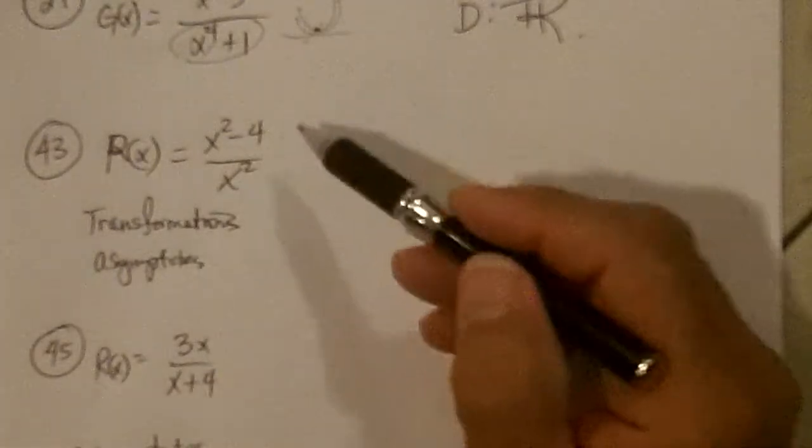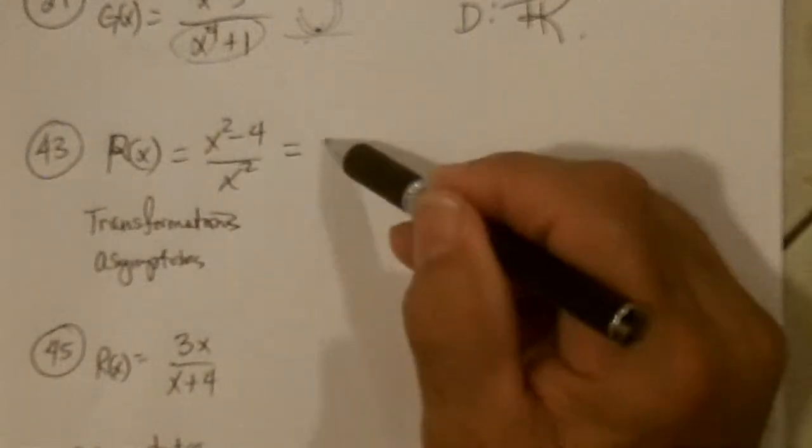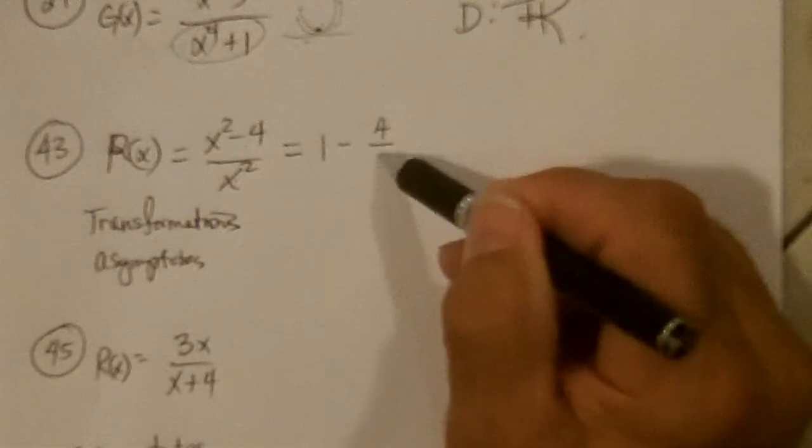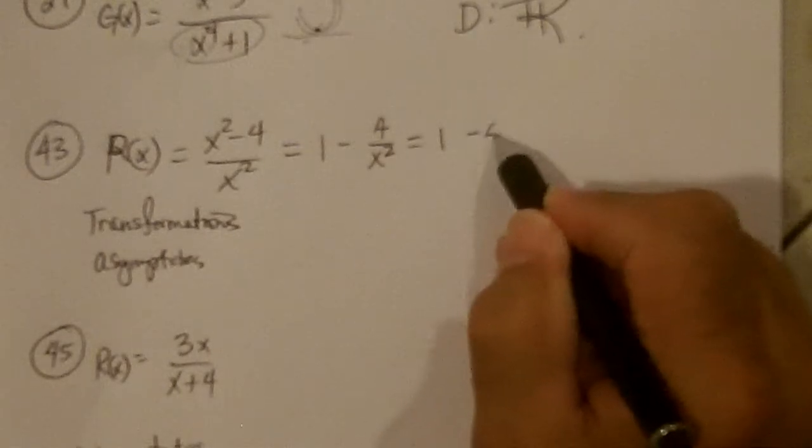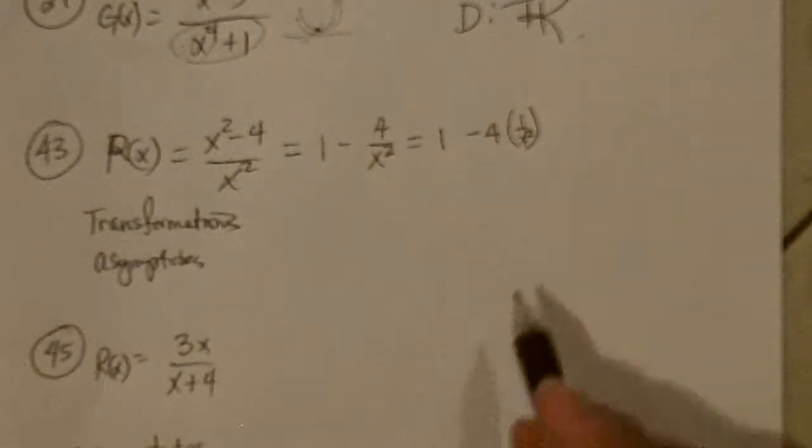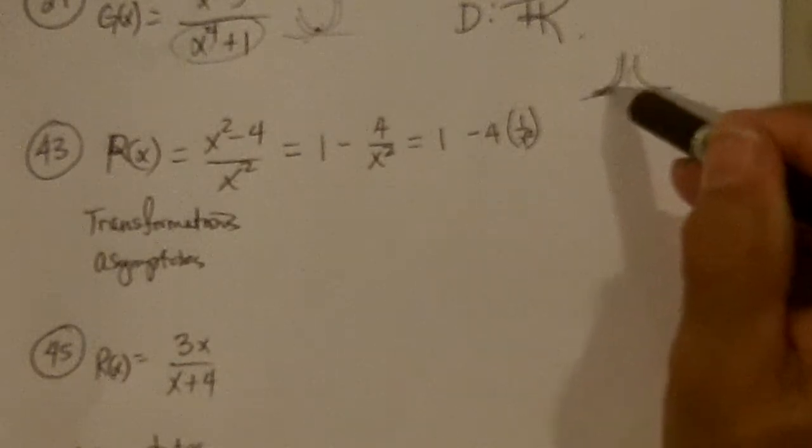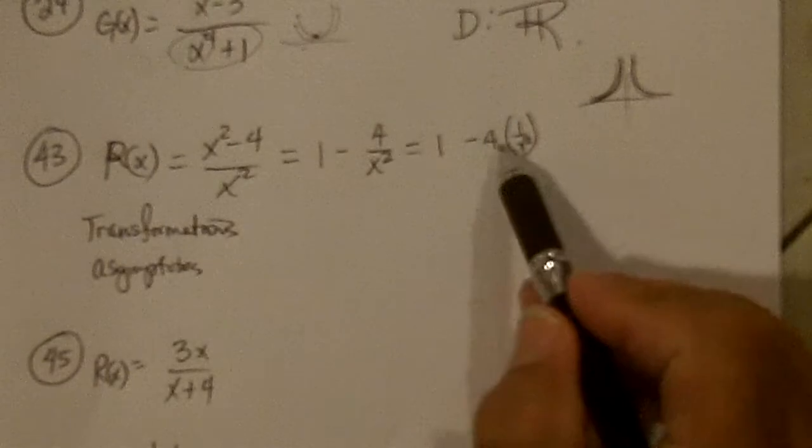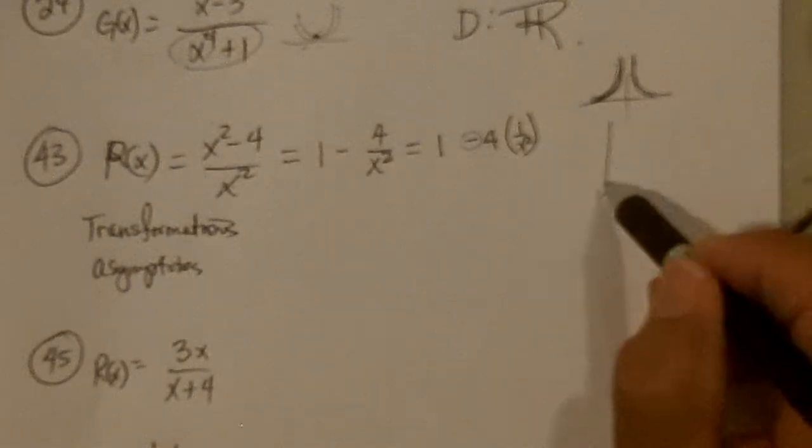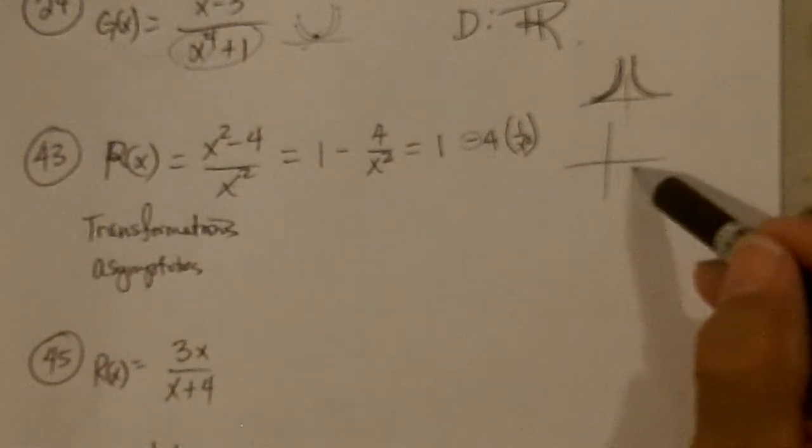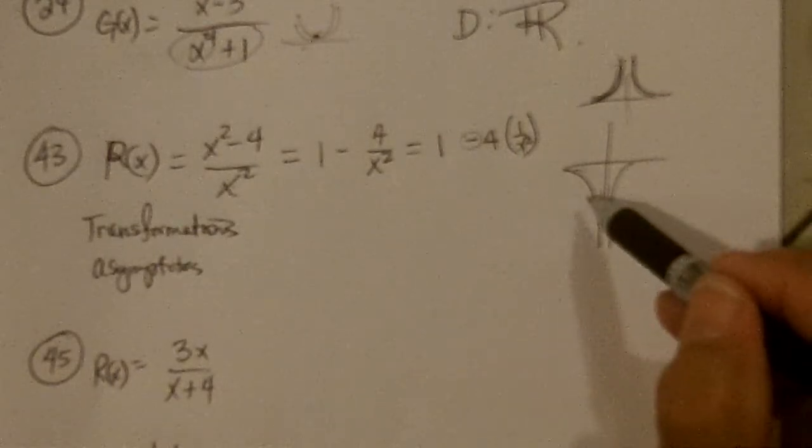43, it says using transformations. Well, what you need to do is divide the x squared into both of these, and you get x squared and x squared is 1 minus 4 over x squared, which is like 1 minus 4 times the 1 over x squared. 1 over x squared, you should know, looks like that pretty much, both going up on either side. And so this says flip it over, stretch it by 4, and move it up 1. Flip it over, multiply by 4, and then move it up 1.